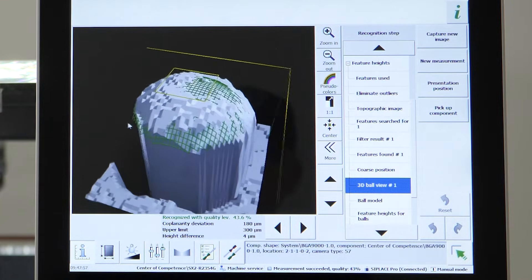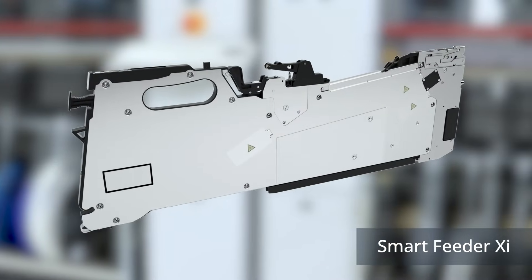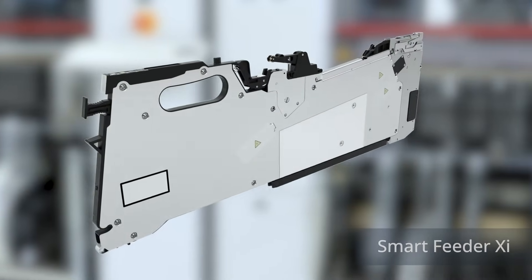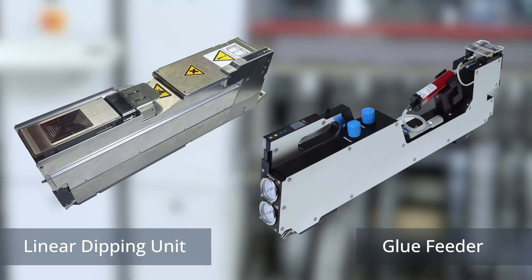When it comes to precise component feeding, the C Place SX platform offers intelligent solutions like the Smart Feeder Xi and a wide array of non-tape feeders, as well as process tools such as glue feeders or the linear dipping unit.